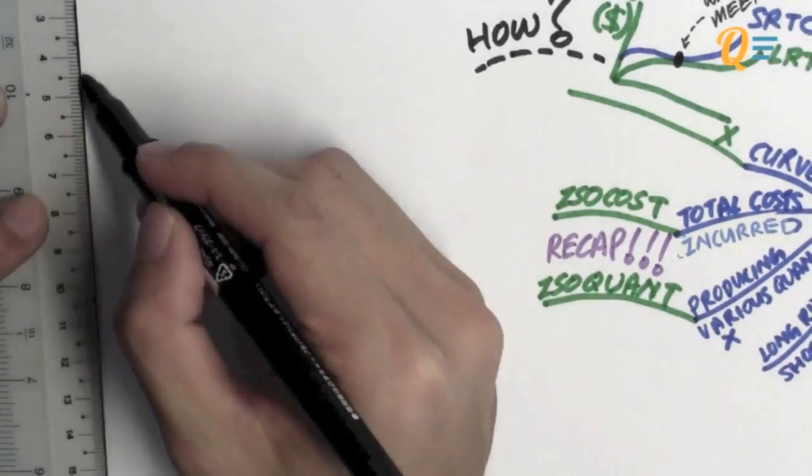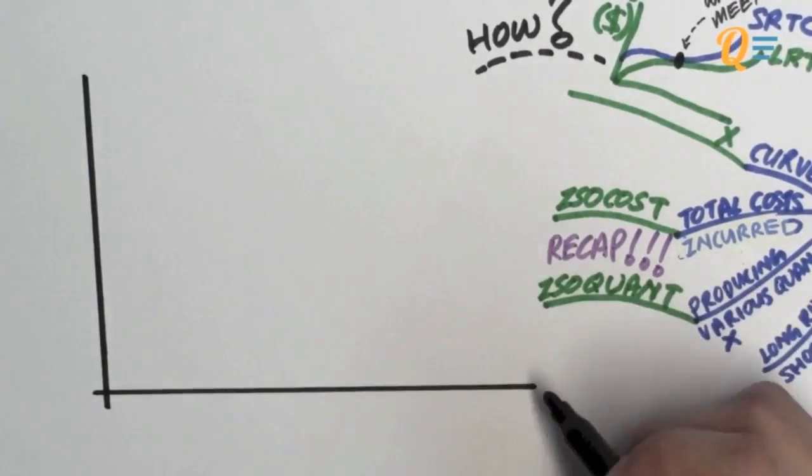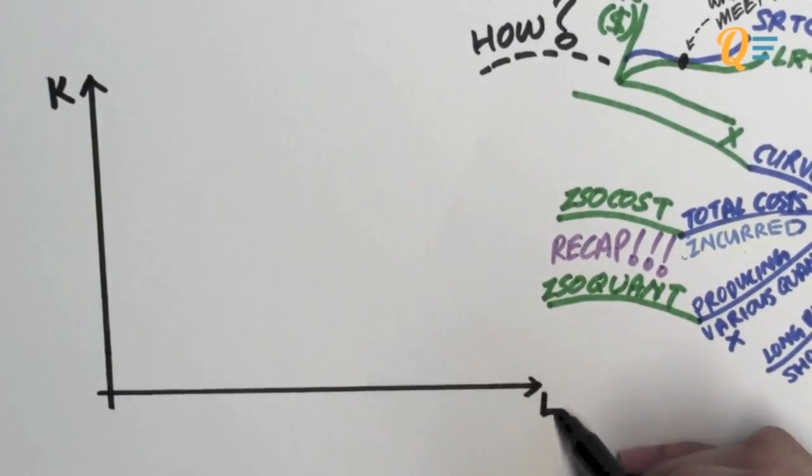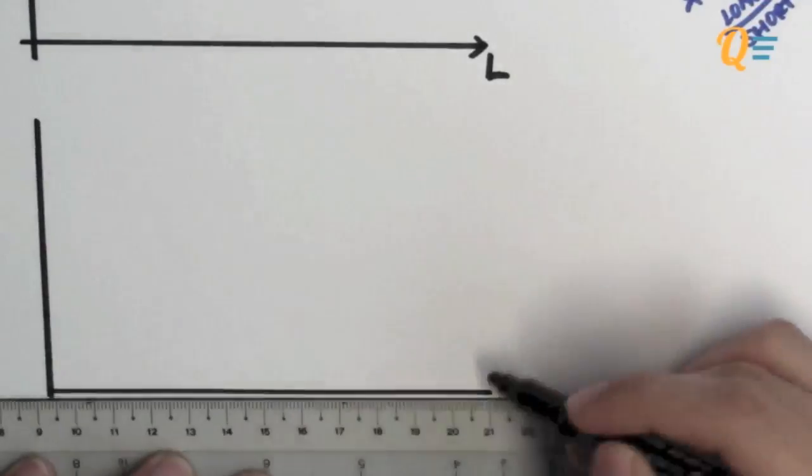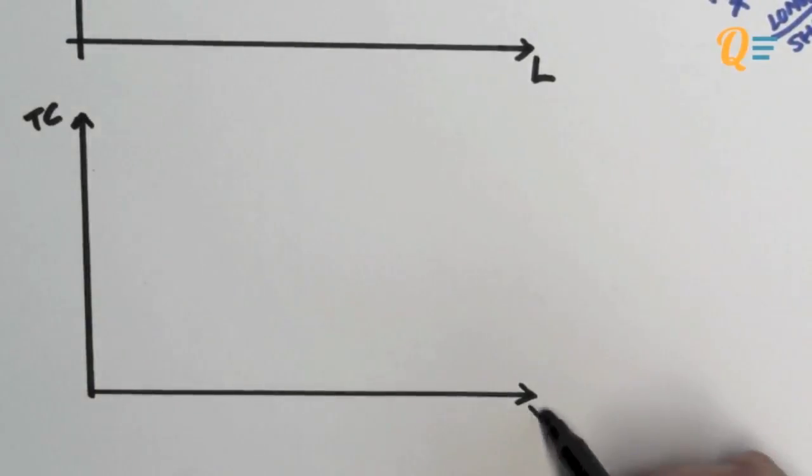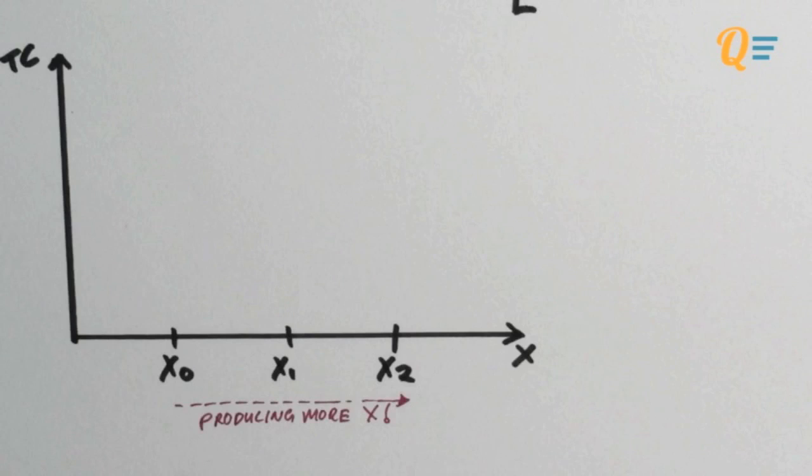Okay, just let me quickly draw a graph with capital versus labor and just right below it I'm going to draw another graph with the total cost versus the total quantity of X produced. So let's say I'm interested in producing three quantities of X: I have X naught, X1, and X2. Obviously as I move towards the right side of the horizontal axis I'm increasing the production of X.